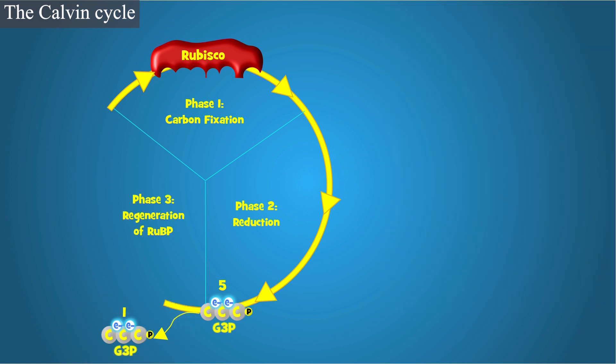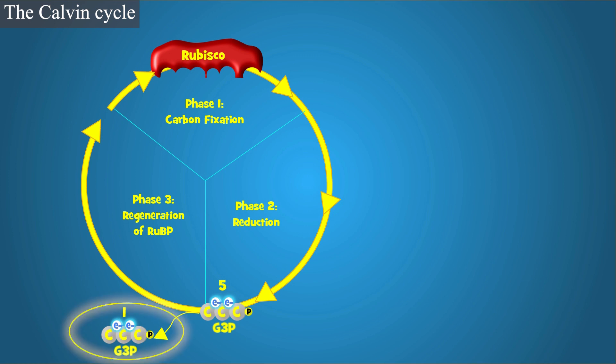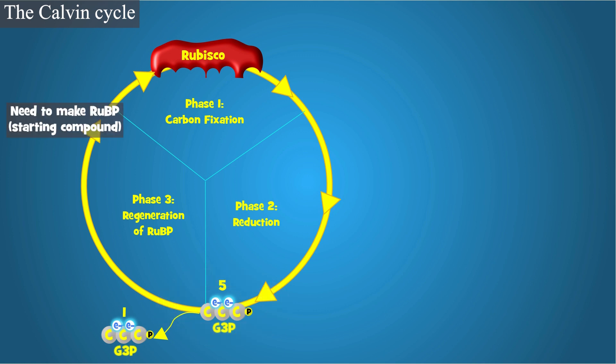Phase 3: Regeneration. Notice in our model that only one G3P is removed from the cycle, but five more remain. These five G3P molecules get converted back to our starting compound, RuBP. Remember, the Calvin Cycle is a cycle, so we need to make our starting compound again to keep the cycle going.